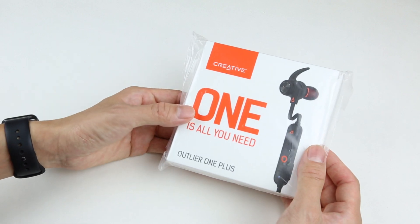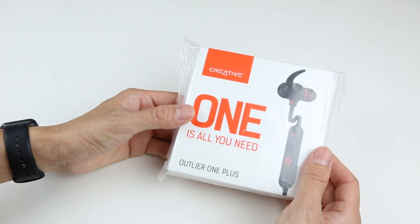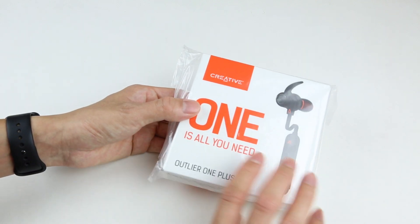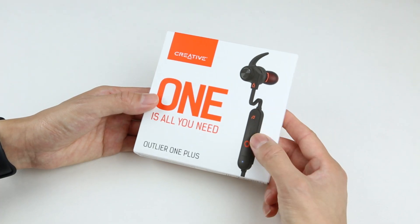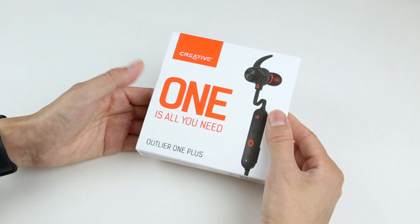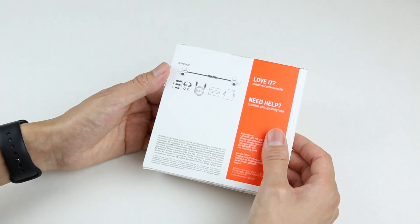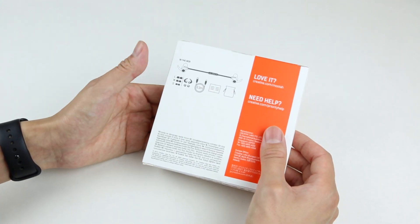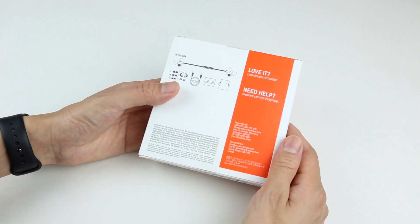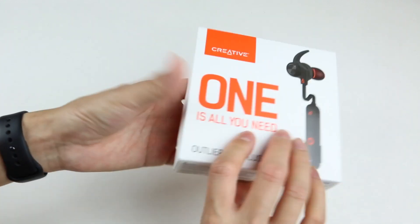Looking at the box we can see the package is still pretty similar as the last one, except the accent color on this one is orange. Up front we have the picture of the earbuds and the slogan for this model, one is all you need. On the back of the box we can see some package content information and some manufacturer information as well. Again very simple design from the outside.